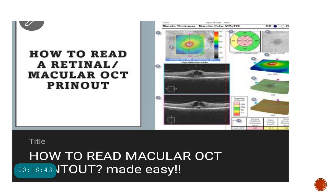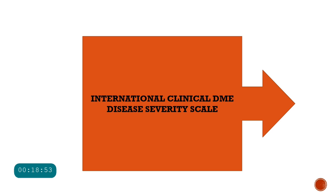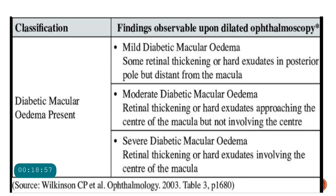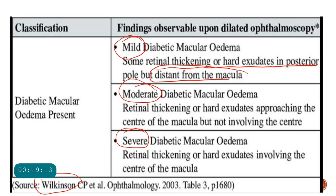A video on how to read a retinal macular OCT printout is available on the channel. The third classification is the International Clinical DME Disease Severity Scale by Wilkinson: mild DME means retinal thickening or hard exudates in the posterior pole but distant from the macula; moderate means thickening approaching but not yet involving the center; and severe means thickening actually involving the center of the macula.